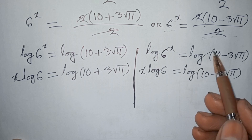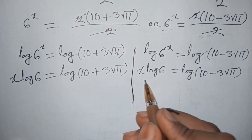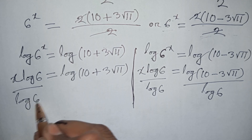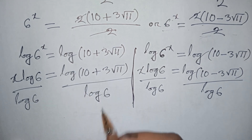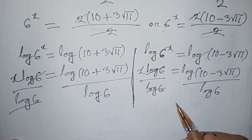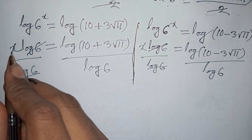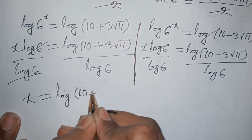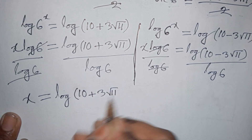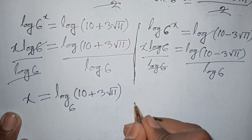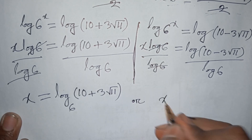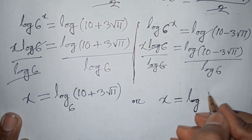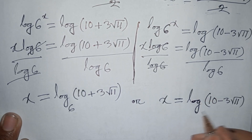We apply log to both sides and divide both sides by log 6. The log 6 terms cancel, leaving x equals log base 6 of 10 plus 3 times square root of 11, or x equals log base 6 of 10 minus 3 times square root of 11. These are the values of x in this problem, and this is our final answer.